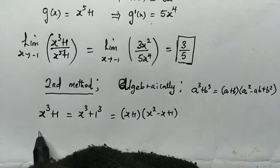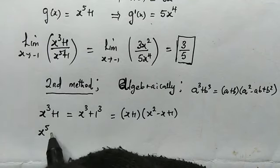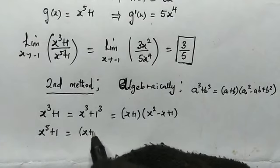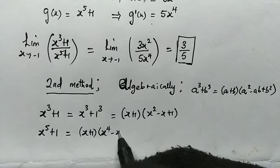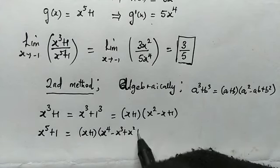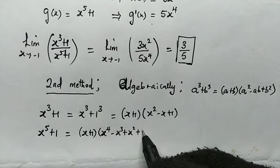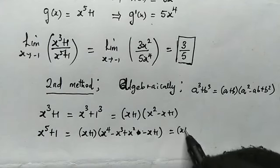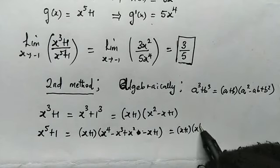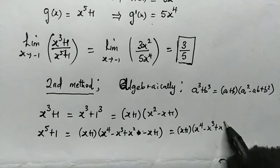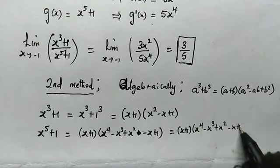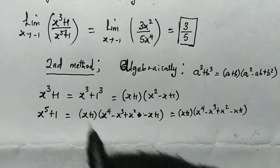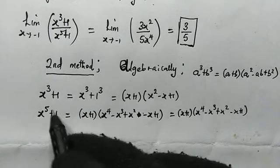For the denominator, the quintic expression x to the power of 5 plus 1 is factorized as (x plus 1)(x to the power of 4 minus x cubed plus x squared minus x plus 1). This is done using synthetic division, since we know that x plus 1 is a factor.